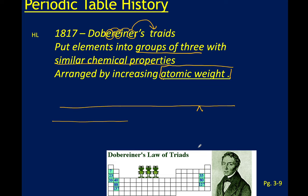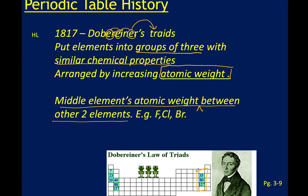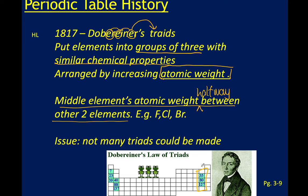What did Döbereiner do? He put elements into groups of threes — hence the triads — and grouped them with similar chemical properties. What was really interesting is that if you add up the outer two elements and divide by two in terms of their mass, you get the middle element being halfway between the other two. It unfortunately didn't work for everything because not all elements had been discovered yet.